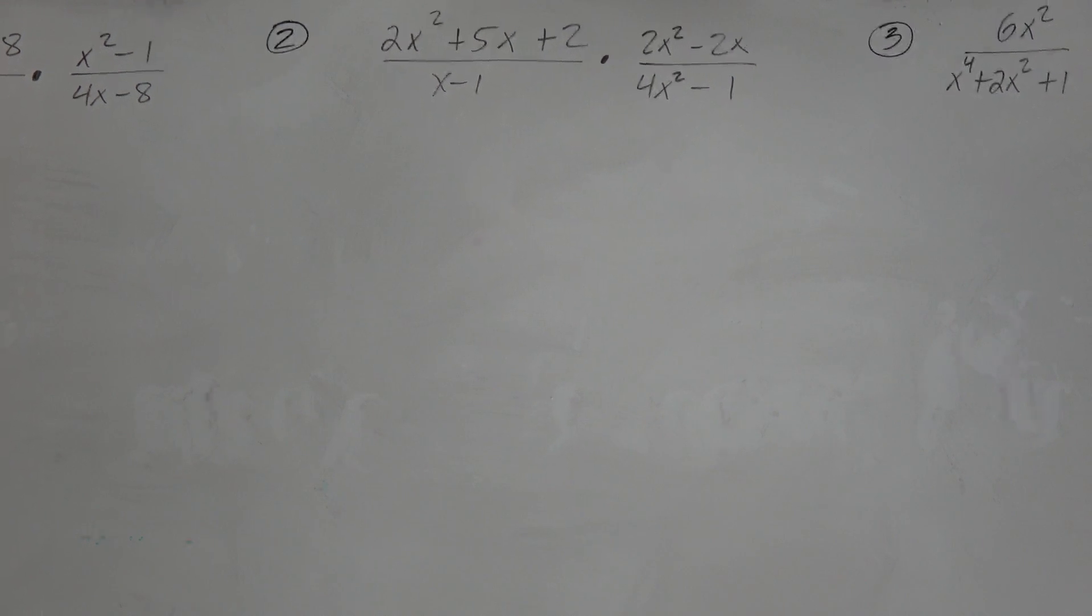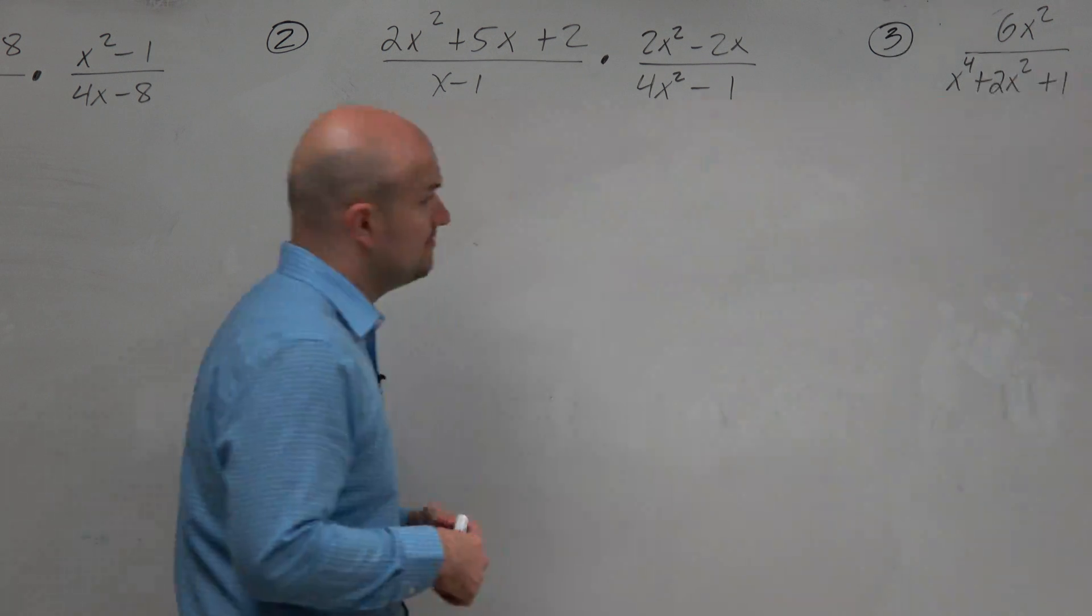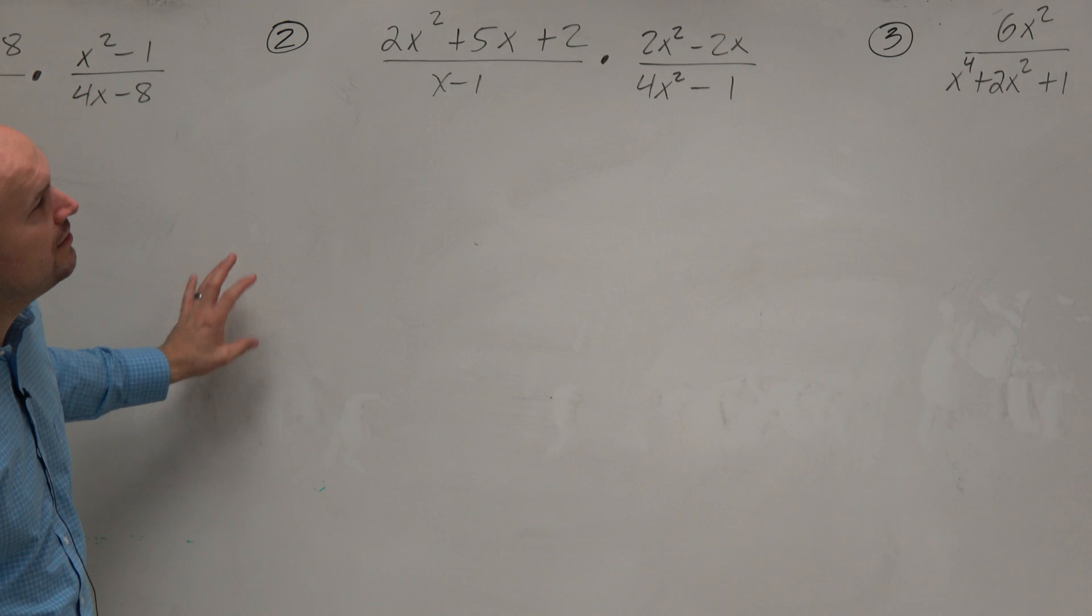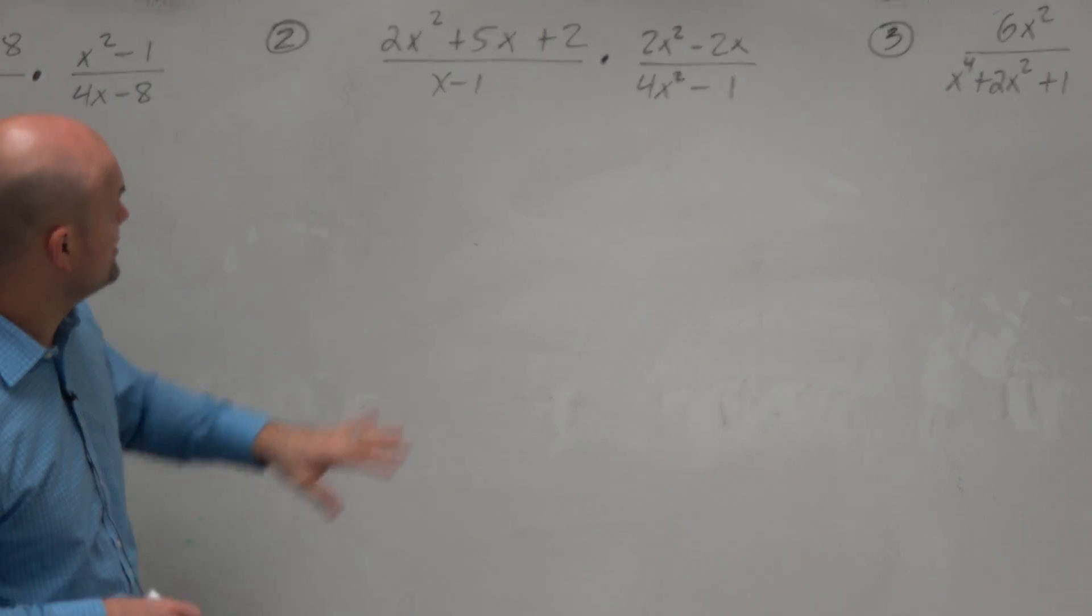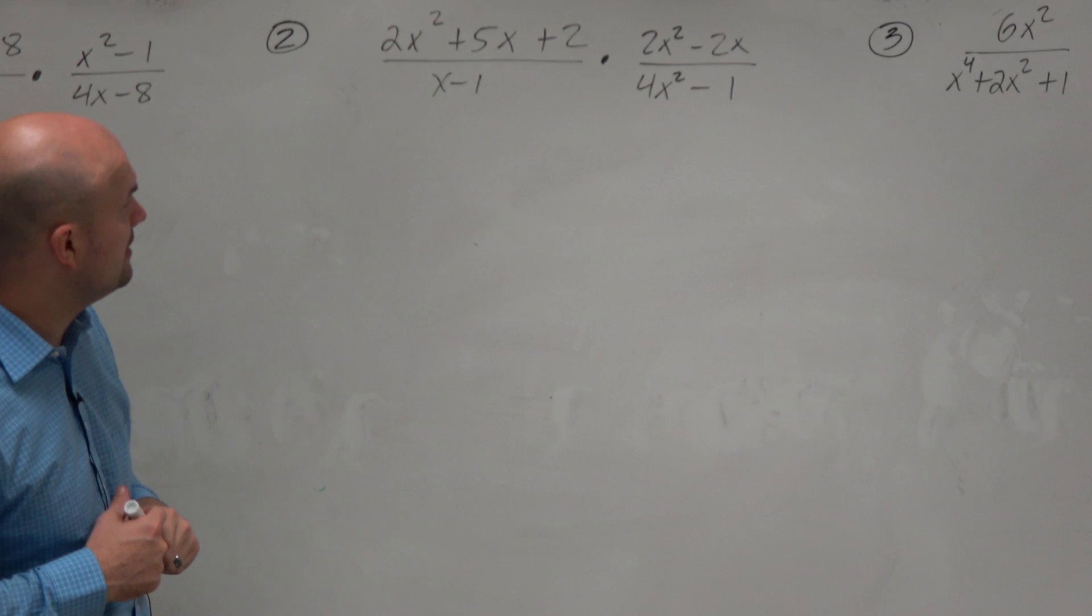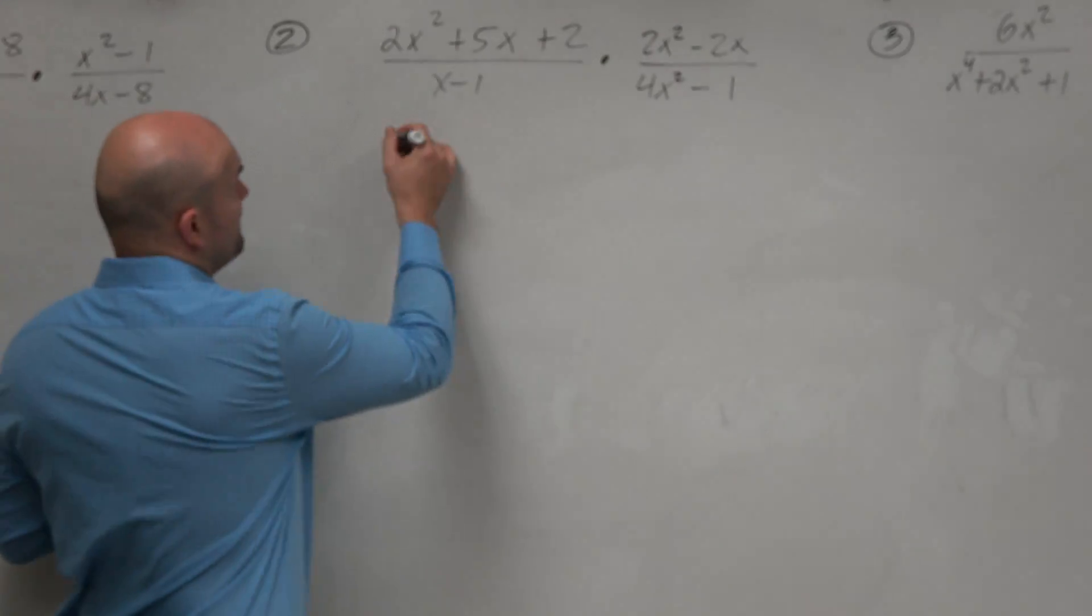What I want you to do in this case is once you have simplified them, make sure you also find the restrictions. The first thing we want to do for number two is to simplify this, or factor this.